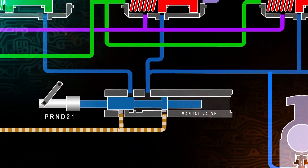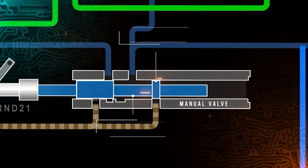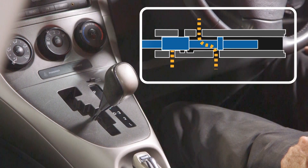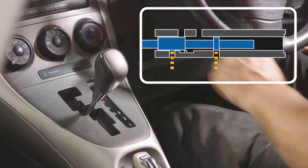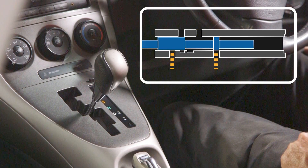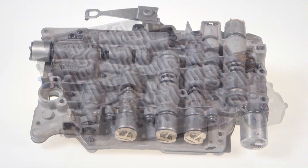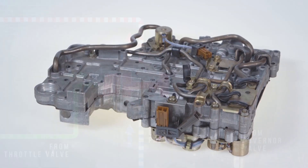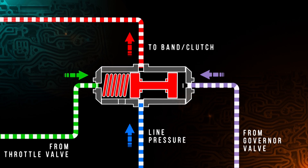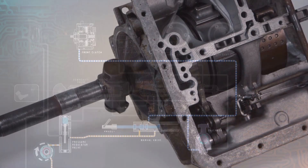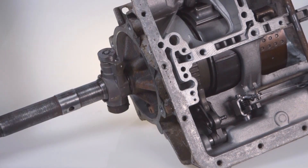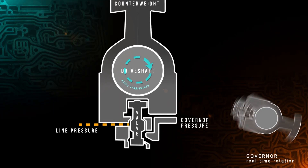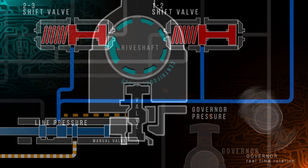Despite the major changes to the design of the automatic transmission over the decades, the hydraulic control system remains a crucial part of every automatic gearbox. In this video, you'll learn about the key principles of the hydraulic control, covering oil flow, the valve body, solenoids, circuits, and clutch pack operation. After completing this module, you'll have a comprehensive understanding of how these components contribute to the operation of the hydraulic system and the automatic transmission itself.